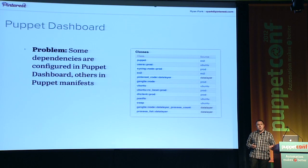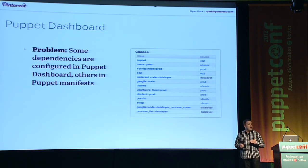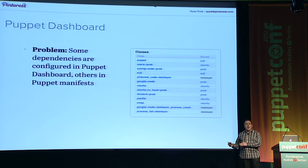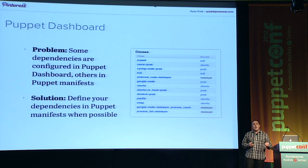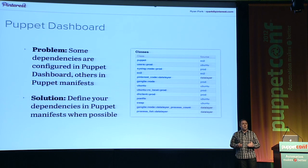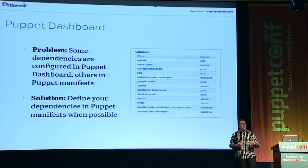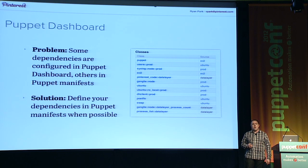One problem we've had with Puppet Dashboard is that the number of Puppet classes listed becomes unmanageable after a while. Not only are there classes listed in the Dashboard, but there are also classes included in your Puppet manifest via include statements or inheritance. We found that gets really confusing for people to understand what's being installed on a server and why. So we've moved to an approach where we define more of these dependencies in the Puppet manifest and fewer in the Dashboard. The Dashboard is still a good entry point, but putting the dependency graph in the manifest makes it easier for engineers to understand.